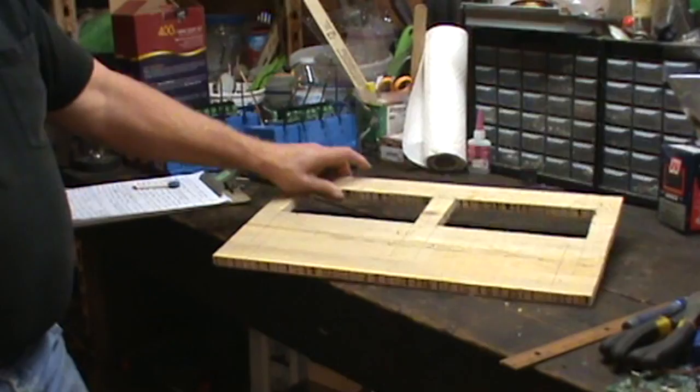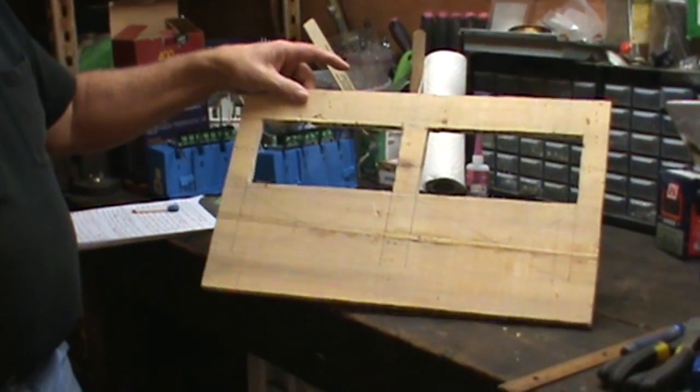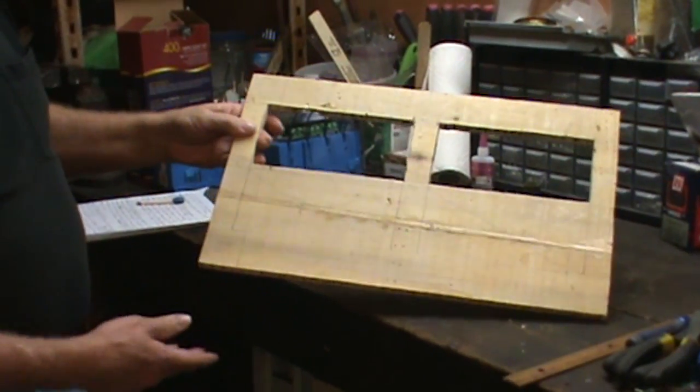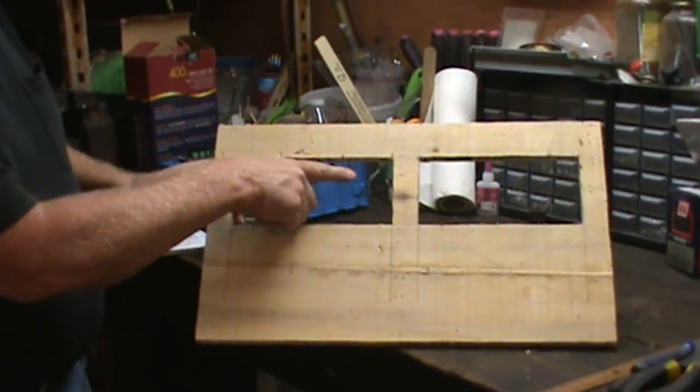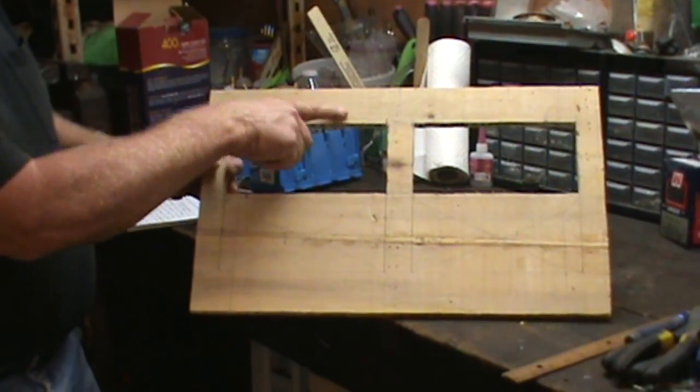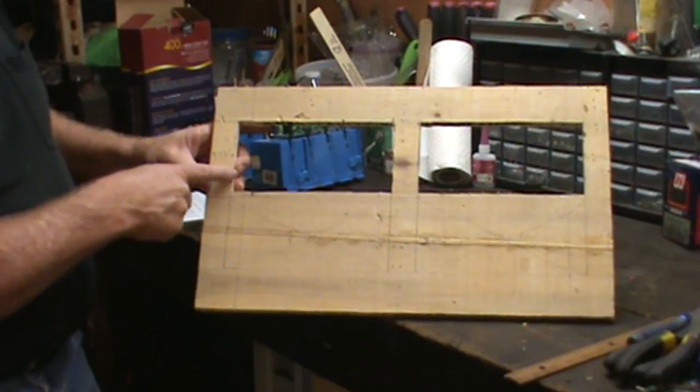All right, this is our gang box removable mounting board. It goes in the box. Down to the gang box holes right here is two inch, in from the ends, inch and a quarter.